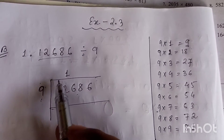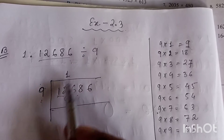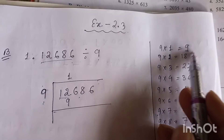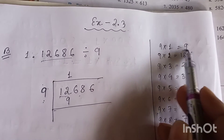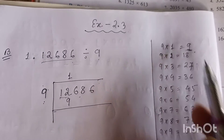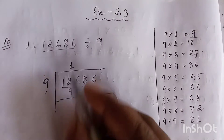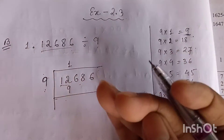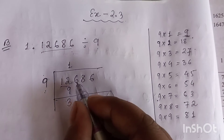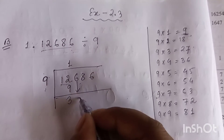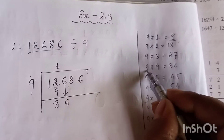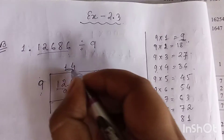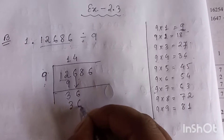Bring down the next digit 6 to make 36. Nine fours are 36, so write 4 in the quotient. Subtract 36 from 36, remainder zero. Bring down the next digit 8, making 8. We cannot divide 8 by 9, so write 0 in the quotient and bring down the next digit 6 to make 86.